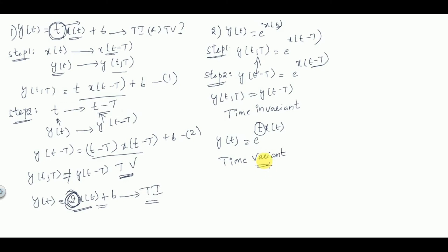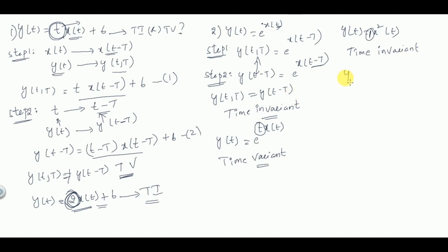Simply put: if coefficients are functions of time, it is time variant; if coefficients are constant, it is time invariant. For y(t) = x²(t), the coefficient is 1, which is constant, so it is time invariant. Similarly, y(t) = sin(x(t)) also has coefficient 1, so it is time invariant.